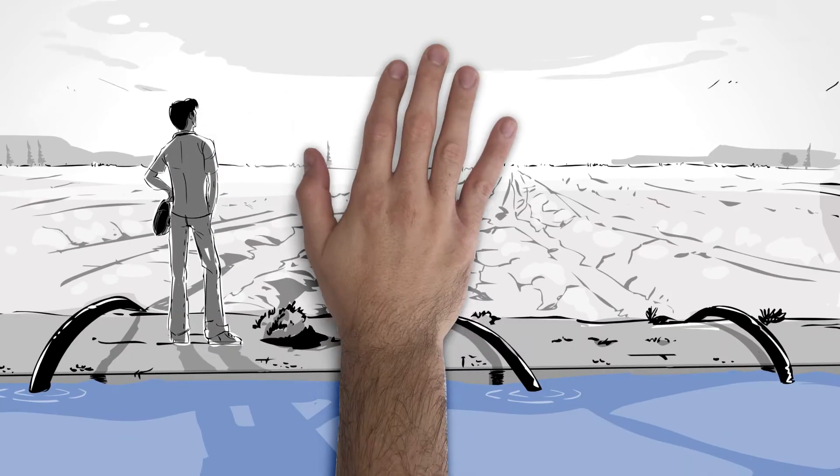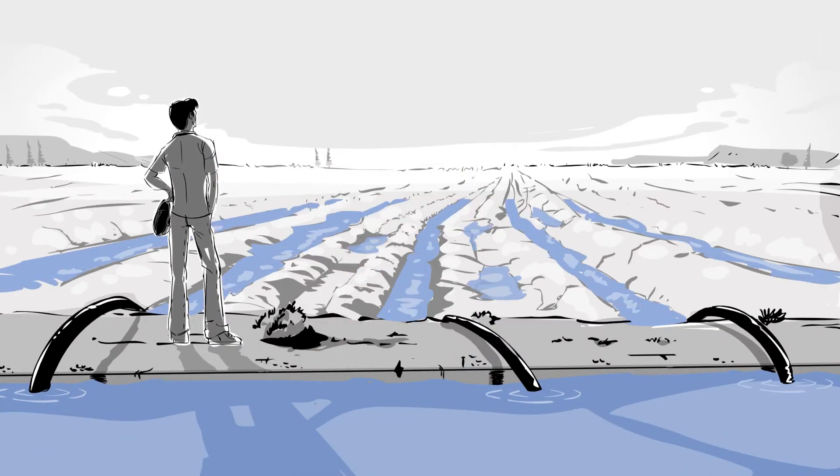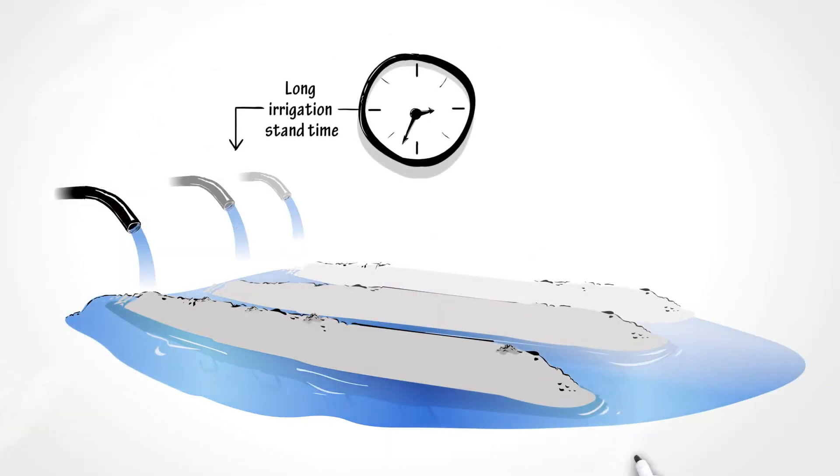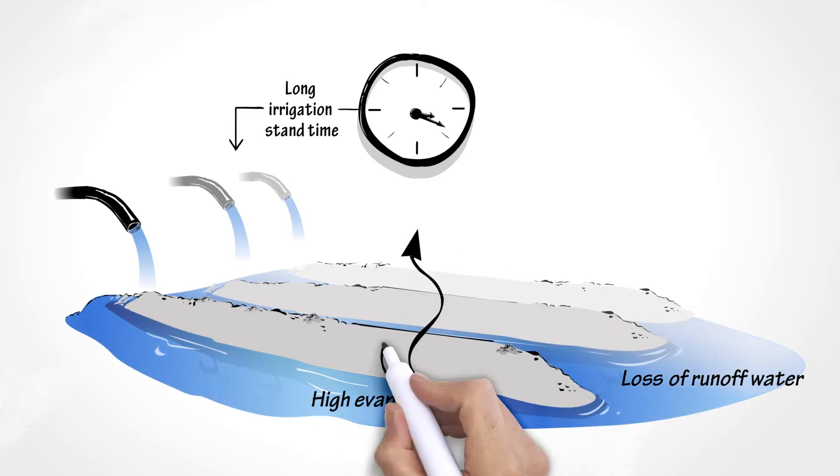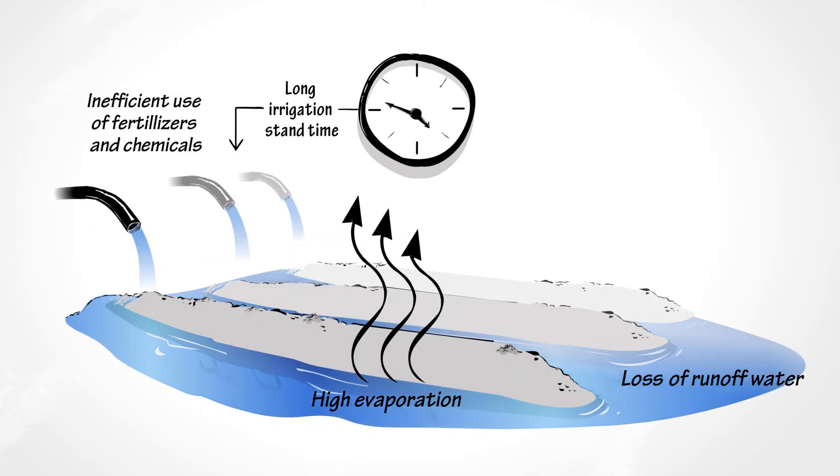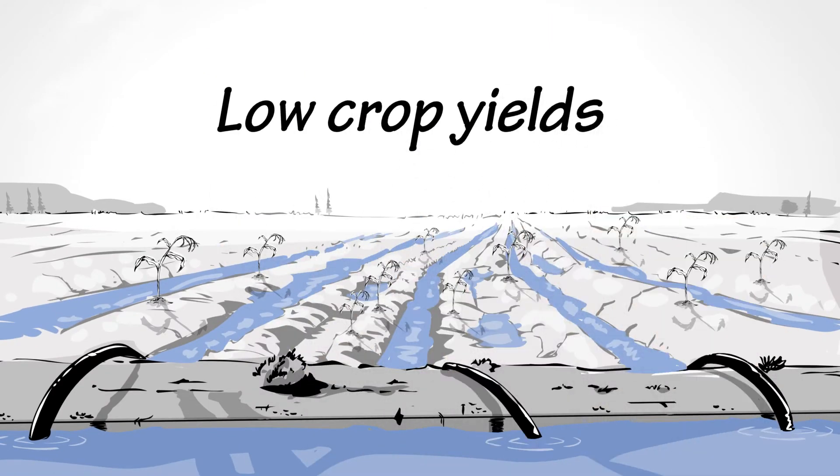As a farmer, you know flood irrigation is inefficient. It results in loss of runoff water, high evaporation, suboptimal use of fertilizers and chemicals, and deep percolation. And still, crop yields may be low.